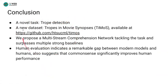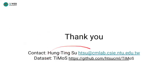Here are some takeaways. We propose a novel task, trope detection, to evaluate and develop learning systems with deep cognition capability, with the new dataset TIMS available for downloading now. We tackle the challenging task with a multi-stream comprehension network. Human evaluation shows a huge gap between humans and state-of-the-art learning systems, and suggests that common sense improves performance. Thank you for listening, and feel free to contact me if you have any questions.